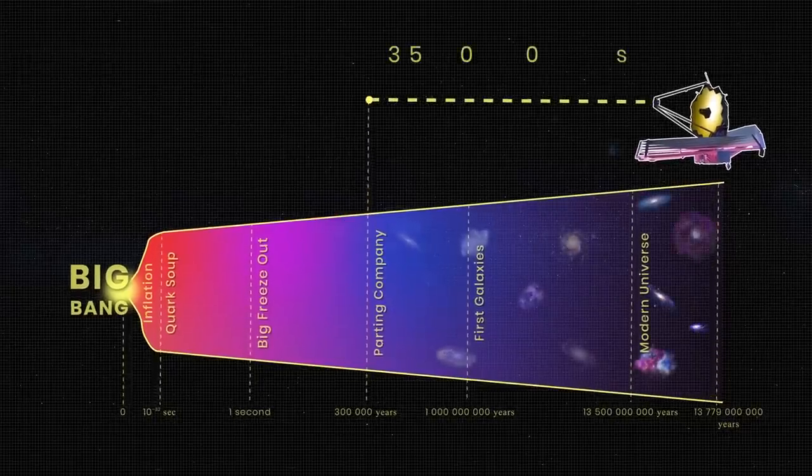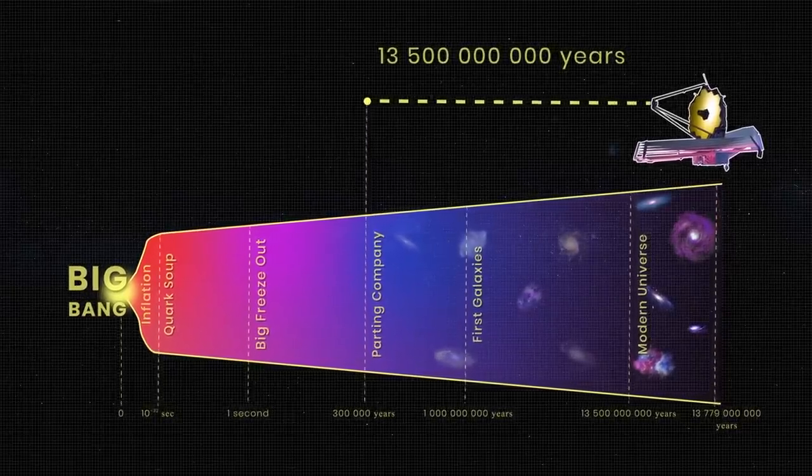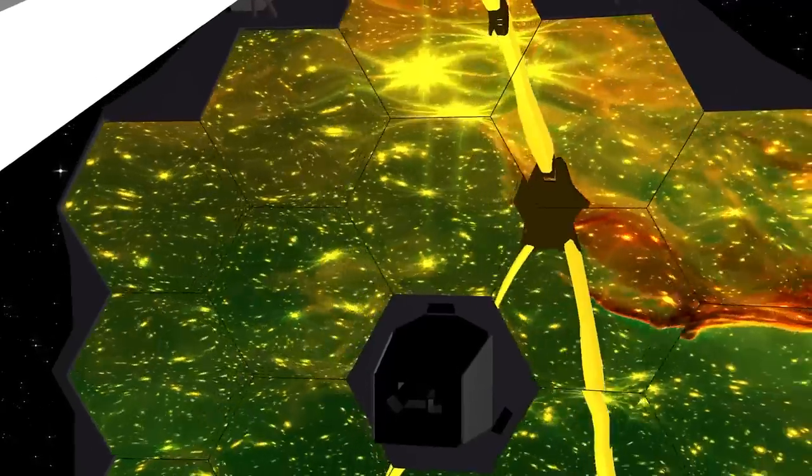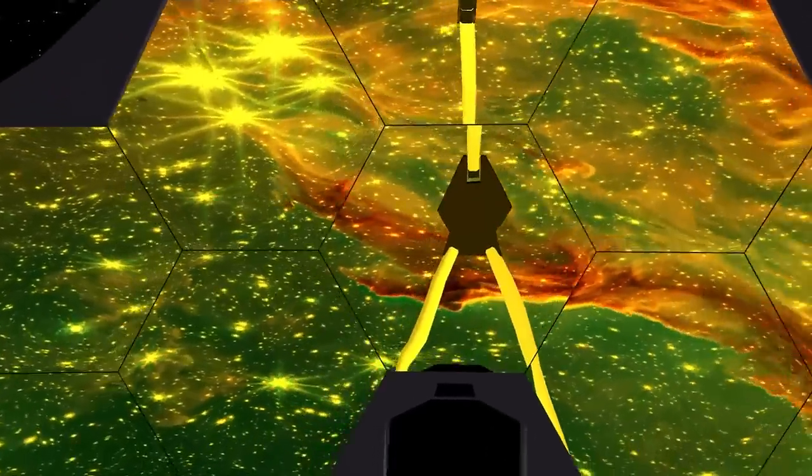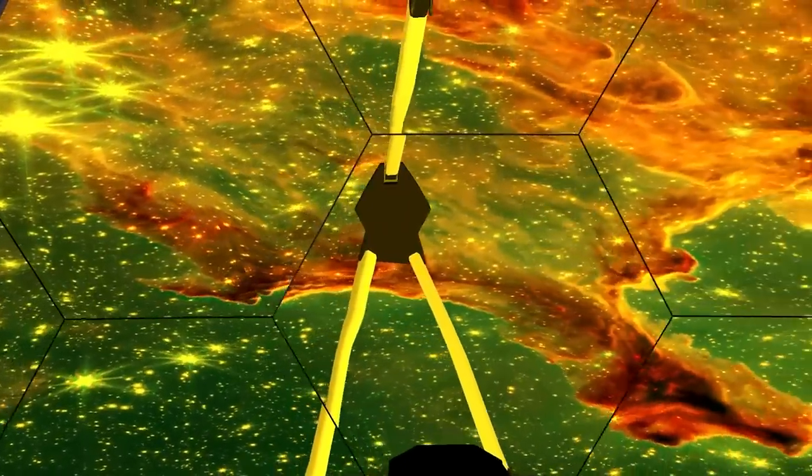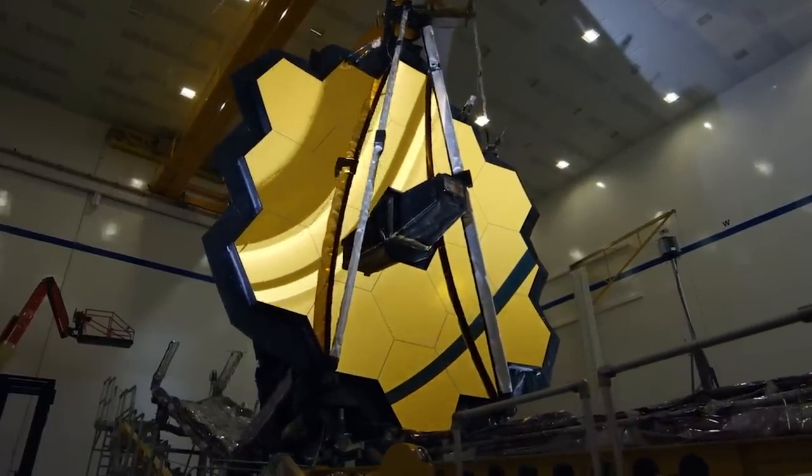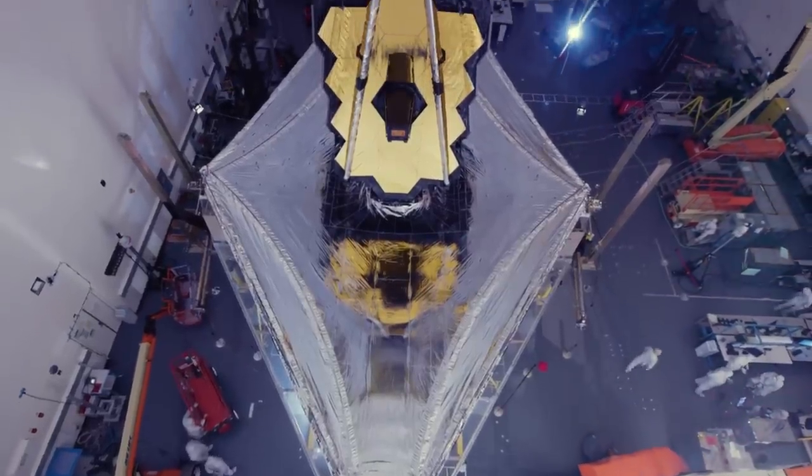The JWST observatory can essentially see back in time, up to 13.5 billion years ago. Astronomers have determined that the universe is around 13.7 billion years old. That said, the space telescope might not be able to capture everything from the moment after the Big Bang, but pretty close.